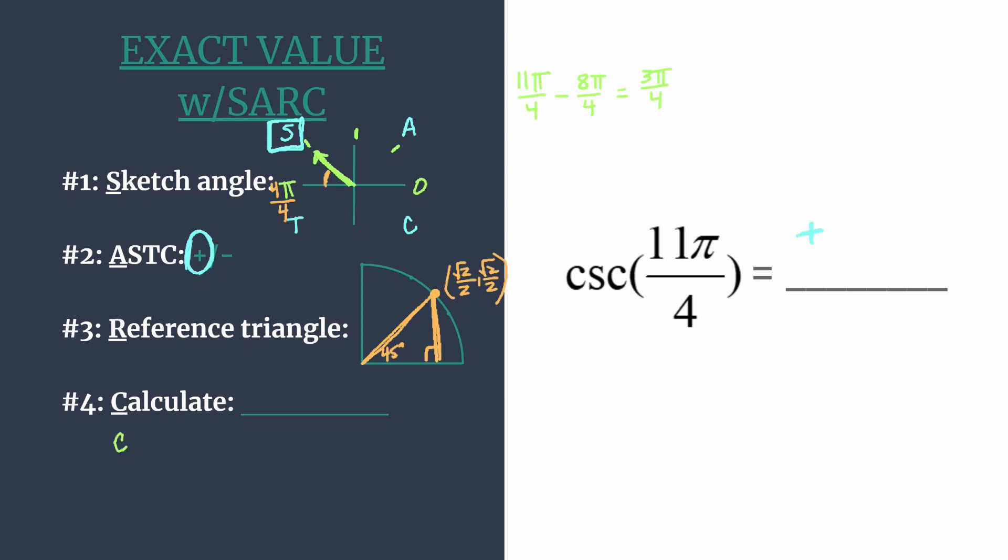And now finally we can calculate. So on the unit circle, we know the cosecant of an angle is simply the reciprocal of sine. Sine's the y. So the cosecant must be 1/y. Here's our y coordinate. We have a small calculation. So we have 1 over √2/2.